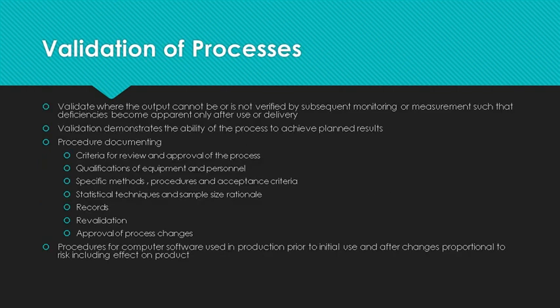This leads us into validation of processes. A process where you can't measure conformance and deficiencies will only be apparent when the customer uses the device must be validated. If you can measure the device and it is still within product characteristic requirements — for example, your testing is non-destructive — validation of the process is not required. If you can only determine conformity with destructive testing, then validation of the process must be performed. For example, if you are testing the effects of variations in air pressure on a weld, product would be produced at a minimum air pressure and then destructively tested to determine if an adequate weld was achieved.